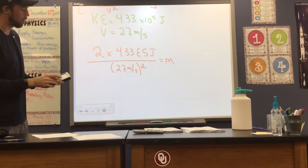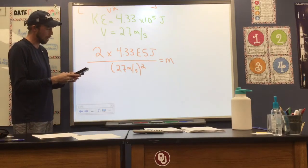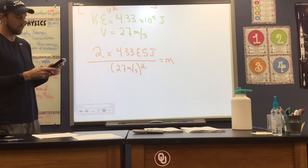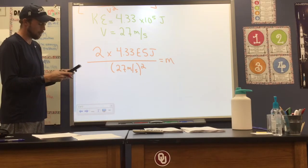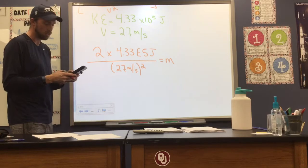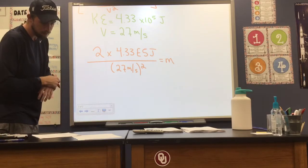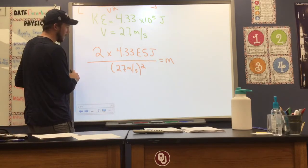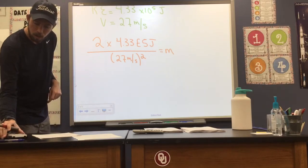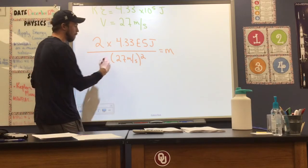So let's take a moment and plug these values in. 2 times 4.33 e to the 5th divided by 27 meters per second squared. Now when I plug these values in, I get a mass of approximately 1,187.9.